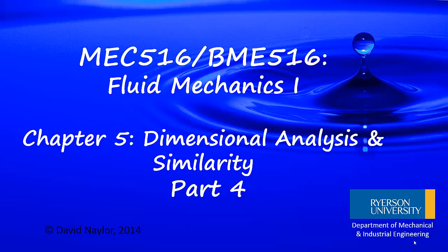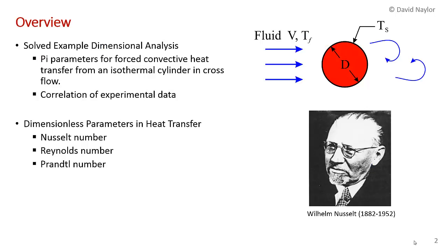This is Chapter 5, Dimensional Analysis and Similarity, Part 4. In this video, I'm going to do a solved example of dimensional analysis. This is a more complicated example, so if you understand this one, you should be set for the final exam. We're going to look at the pi parameters for forced convective heat transfer from an isothermal cylinder in a cross-flow of fluid — an interaction of fluid flow and convective heat transfer.